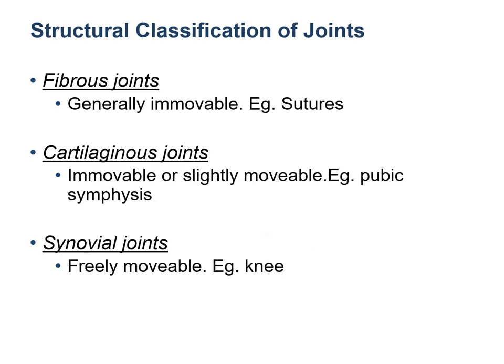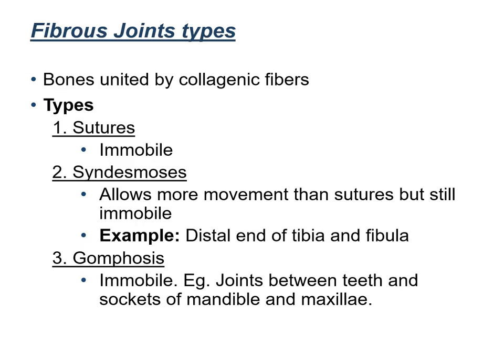Structurally, joints are classified by the type of connecting elements found between the bones, and there are three structural classes. Fibrous joints consist of bones joined by short collagen fibers; most are synarthrosis. Cartilaginous joints consist of bones united by cartilage and most are amphiarthrosis. Synovial joints have a true joint cavity that makes them diarthrosis. The three types of fibrous joints are sutures (in skull bones), gomphosis (between teeth and sockets of mandible and maxilla), and syndesmosis (present at the distal end of tibia and fibula).